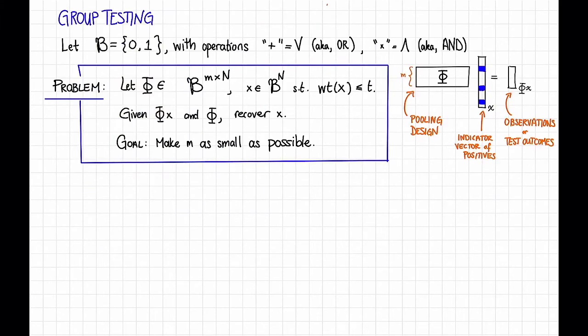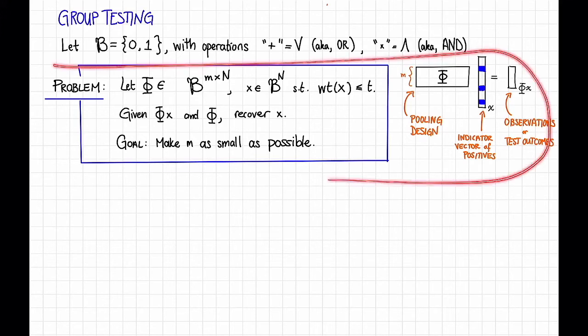Here's a second problem that is syntactically very similar to syndrome decoding called group testing. To explain this problem, let curly b denote this Boolean algebra. So the elements are 0, 1, and my operations are plus and times, but now plus is going to mean the Boolean or, and times is going to mean the Boolean and. With that definition, we can ask exactly the same problem.